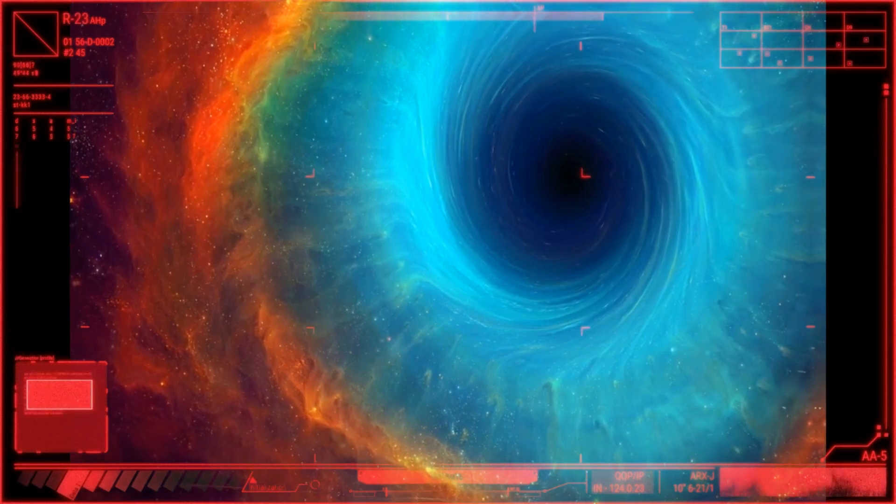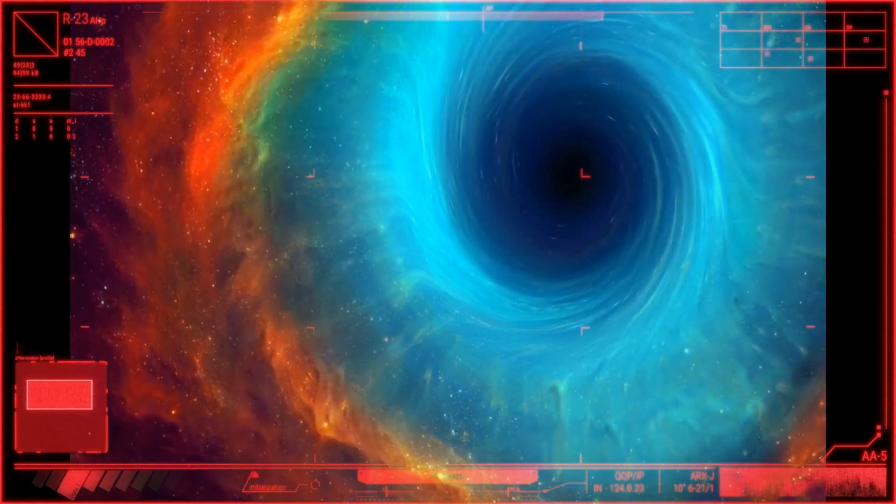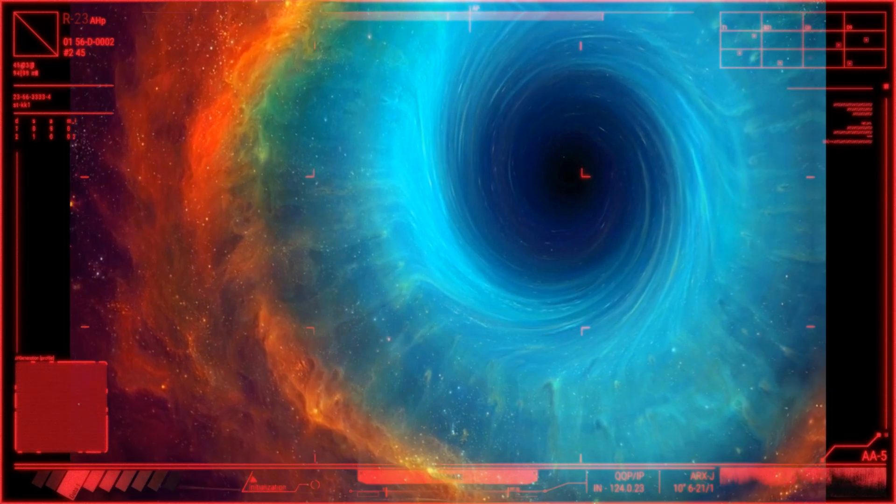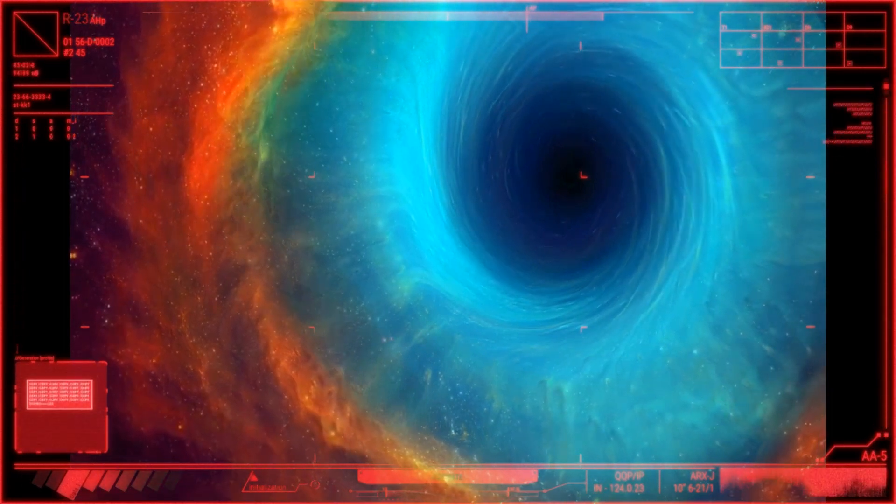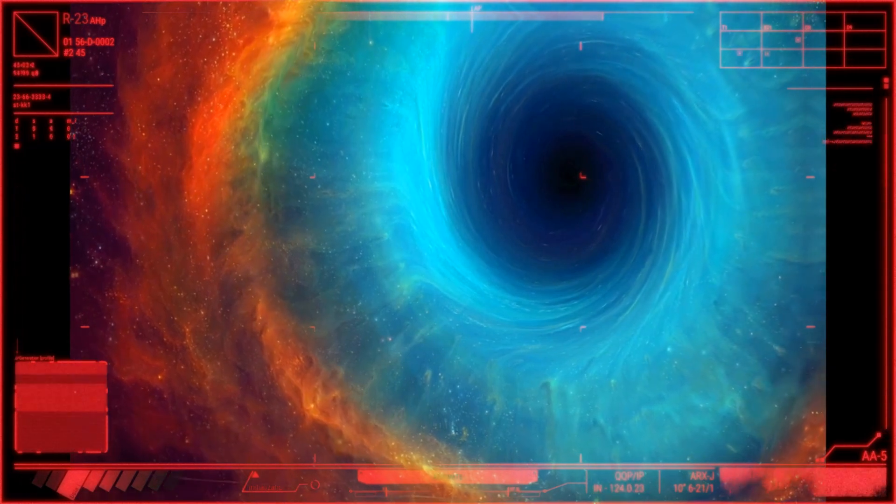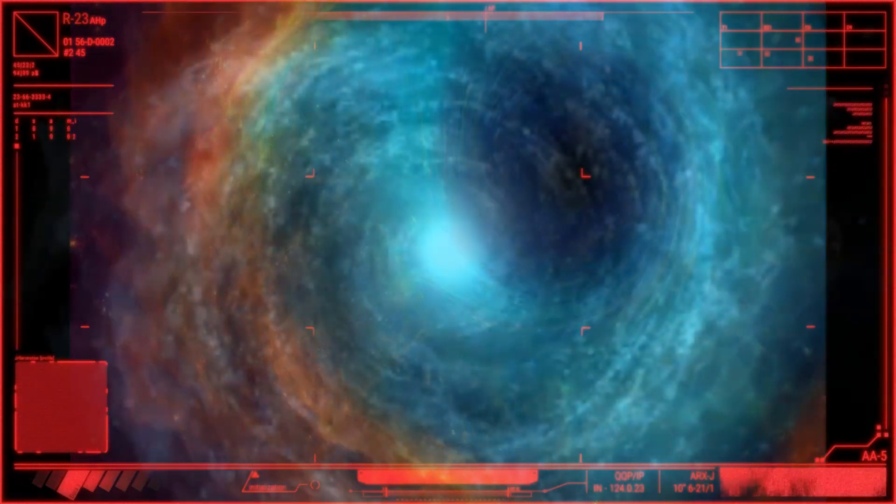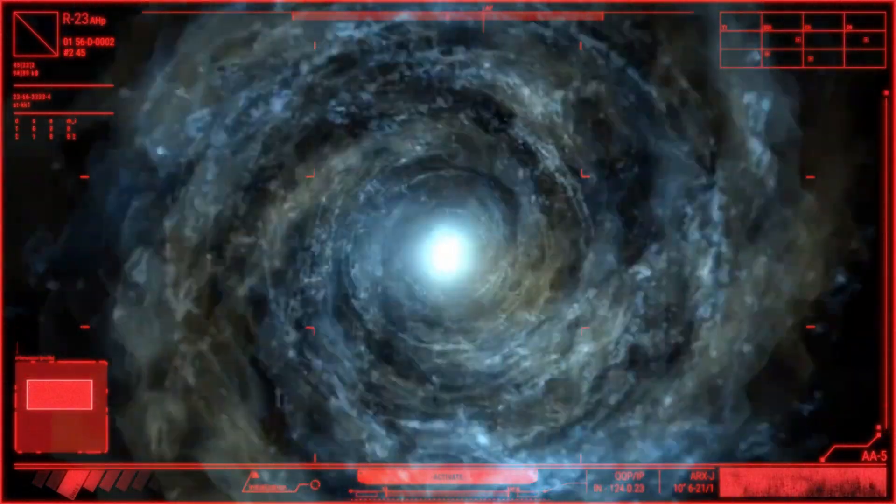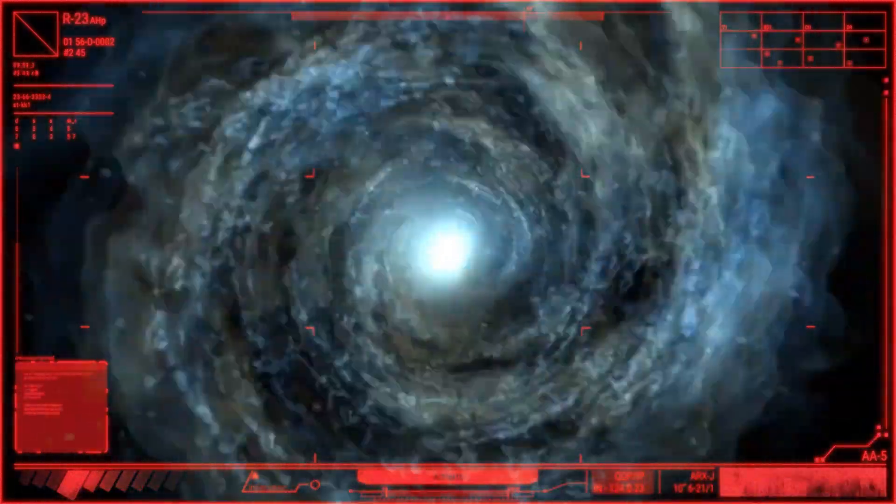Accretion disk. Around a rotating black hole, matter from its surroundings can form an accretion disk. The accretion disk consists of gas, dust, and other debris that is gradually pulled into the black hole due to its strong gravitational force. The material in the accretion disk heats up and emits intense radiation, making it visible to observation.